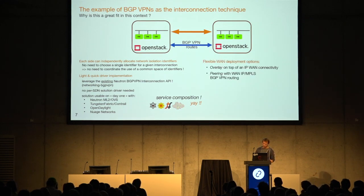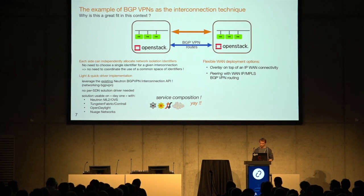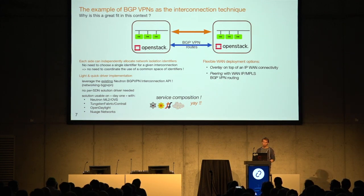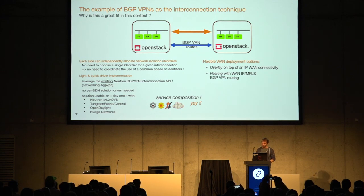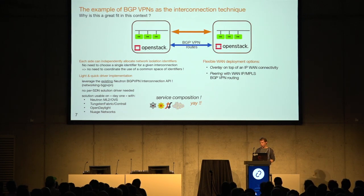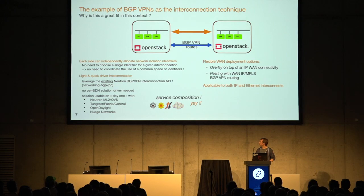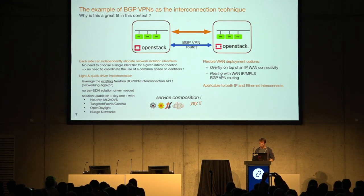Another strength is flexible deployment modalities across the WAN. You can have this routing set up as an overlay on top of IP WAN connectivity, or you can set it up as peerings with WAN IP MPLS BGP VPN routing, where each OpenStack is a BGP autonomous system and routing is propagated hop by hop. And since BGP VPNs has been extended with EVPN, you can do both IP and Ethernet interconnects with this solution.